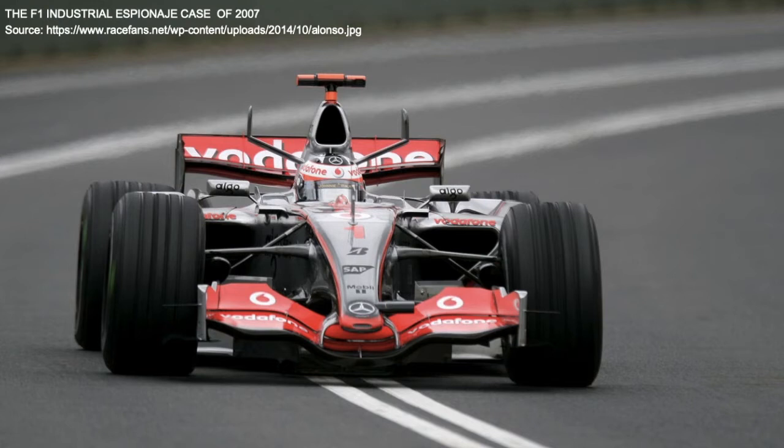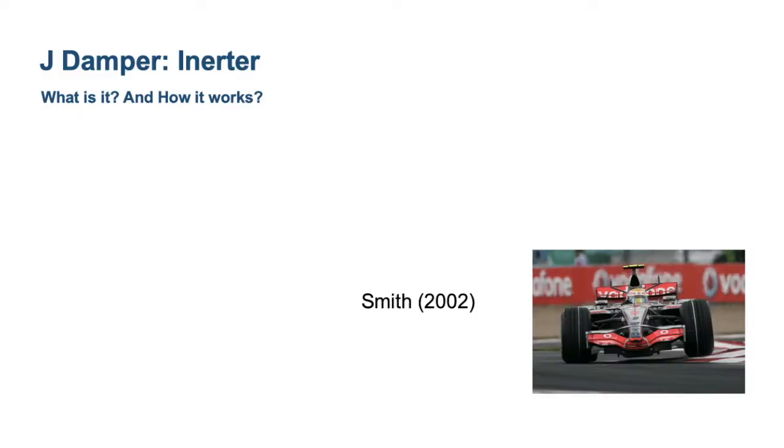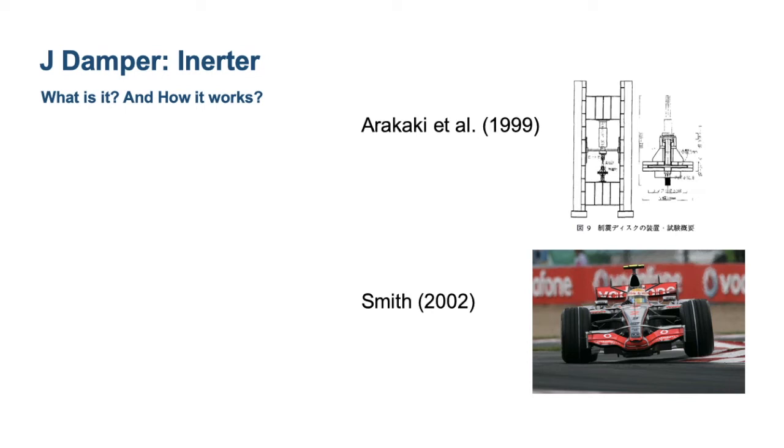It was later known that this J-Damper was actually an inerter. What happened was that Professor Malcolm Smith from Cambridge had been advising the McLaren team, and he had published in 2002 a synthesis of electromechanical networks where he describes the inerter and coins that term. But probably he didn't know that Japanese researchers had already been looking at exactly the same device some years before, and they published in 1999 a series of experiments on inerters in the Architectural Engineering Journal of Japan.